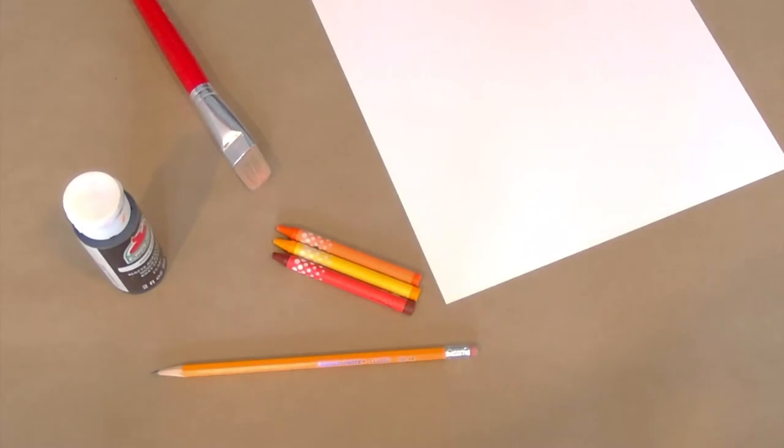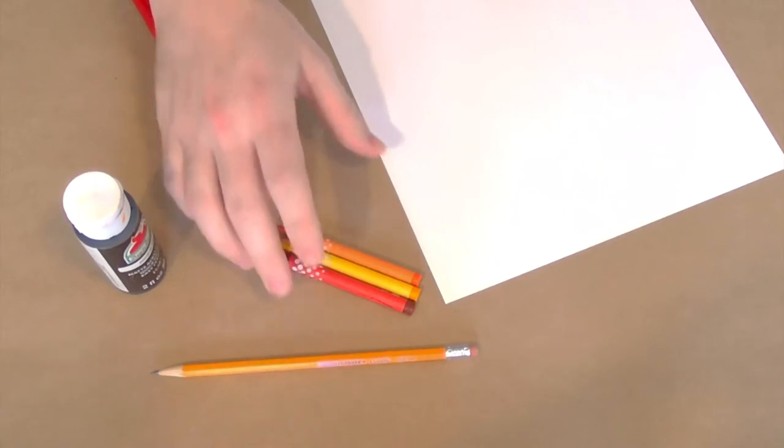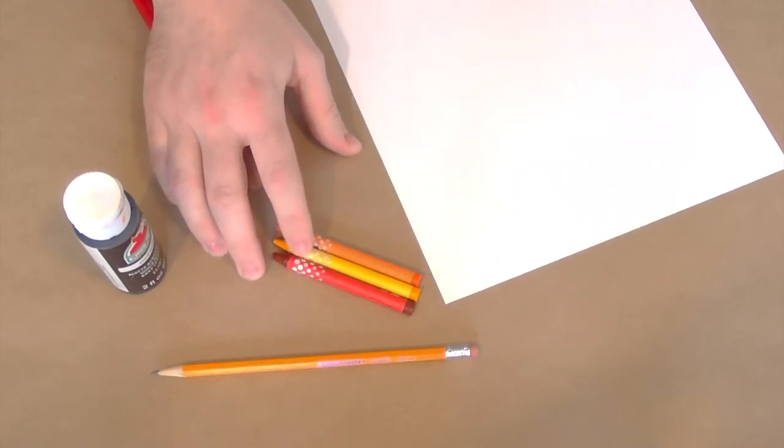For this project you're going to need a piece of white drawing paper, a pencil, and warm color crayons. Warm colors are colors that we would associate or link to hotter temperatures. So the warm colors are red, yellow, and orange.